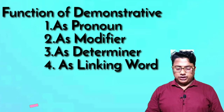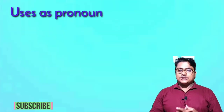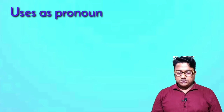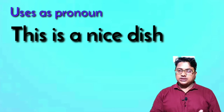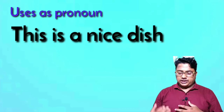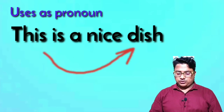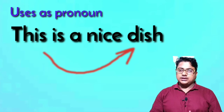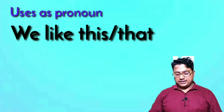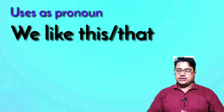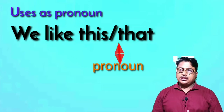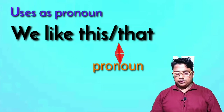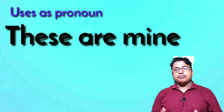Step by step we will learn when this, that, these, and those are used as pronouns. For example: 'This is a nice dish.' Here 'this' is the subject, and the word indicates 'nice dish,' so 'this' is a pronoun. Another example: 'We like this or that.' Here 'this' or 'that' is used as an object — it is a pronoun. Another example: 'These are mine.' Here the word 'these' is used as a pronoun.